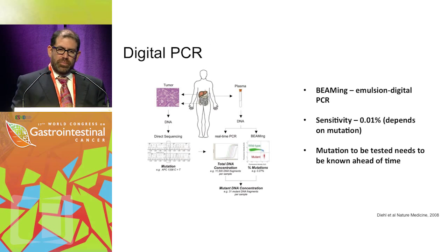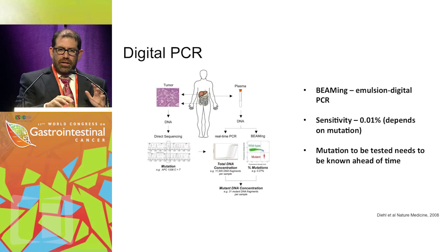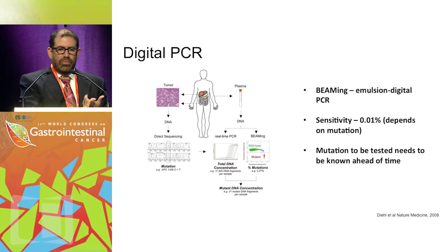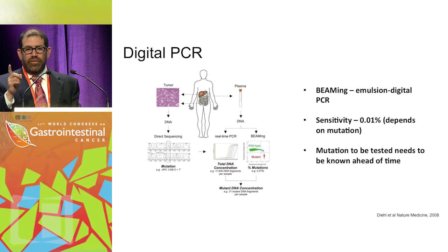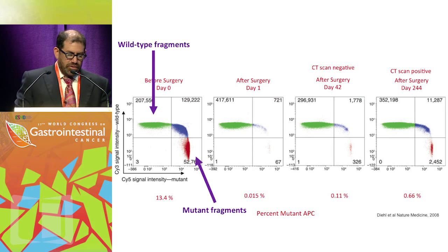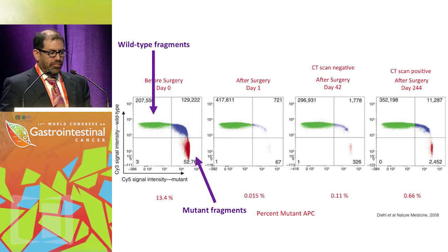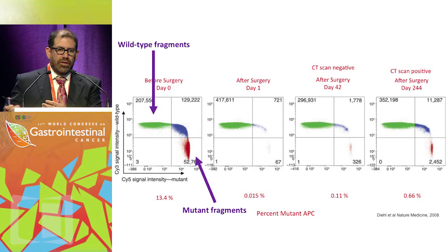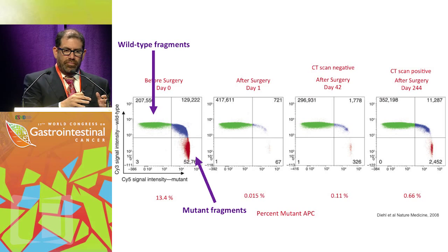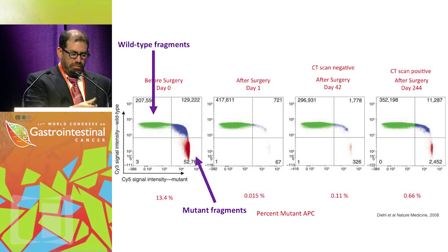Initially we used digital PCR: we'd take a patient's tumor after resection or biopsy, sequence it, and in colon cancer look for the most commonly mutated genes — APC, P53, PI3 kinase, KRAS, NRAS, BRAF — and find one mutation to probe in the patient's plasma. Before surgery you see mutated fragments in red; after surgery levels drop; at 42 days after surgery levels rise again even though CT scans are negative; and at 244 days levels are even higher — demonstrating you can track the mutation in plasma.